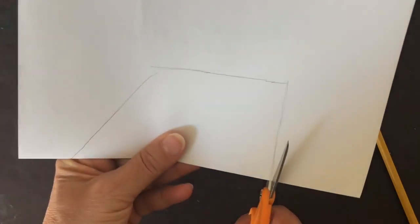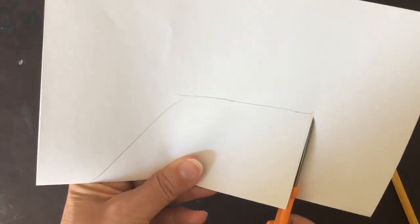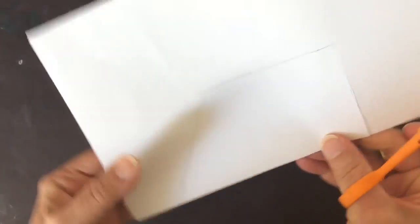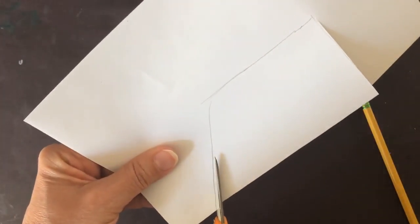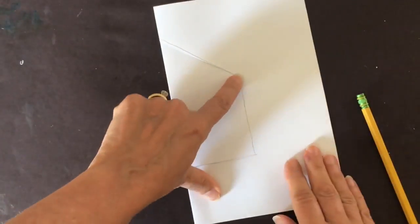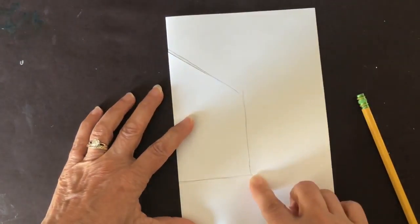Once that is done, I'll take my scissor and cut only the floor and the roof. The vertical line stays untouched.